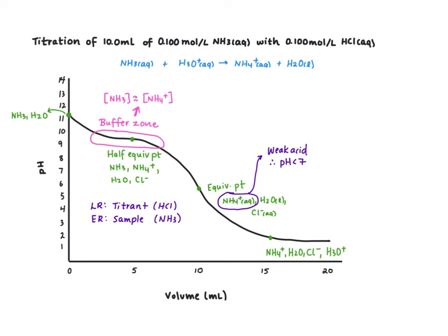If we want to use an indicator to determine our titration or to analyze this reaction, we might not use the same indicator we would use if this was a strong acid-strong base titration. We want an indicator that's going to change color around a pH of 5.75.